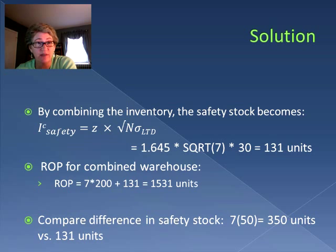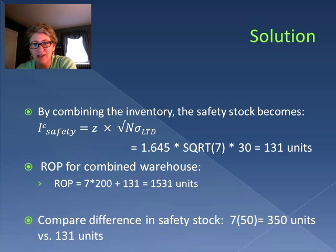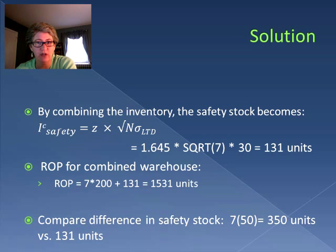Now let's see where the savings come in. If we have one combined warehouse, we have 131 units in safety stock. If we have seven individual warehouses, each has a safety stock of 50, but with seven of them that's 350 units of safety. That's a difference of 219 units — you're not holding on to those 219 units, and the cost of those 219 units can be spent elsewhere. That's the major advantage of combining the inventory.